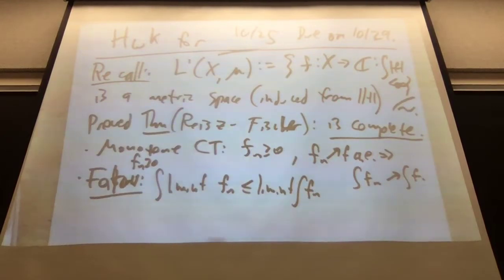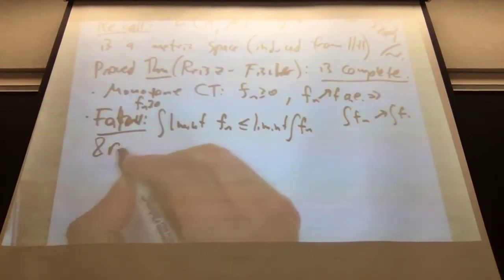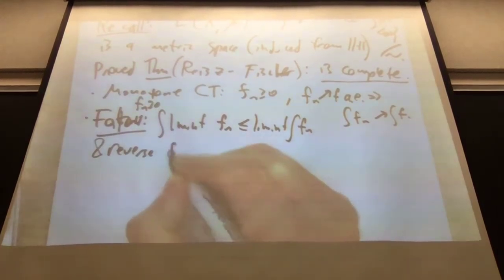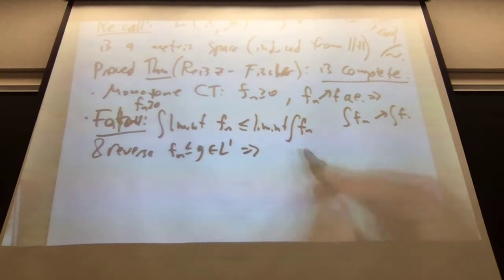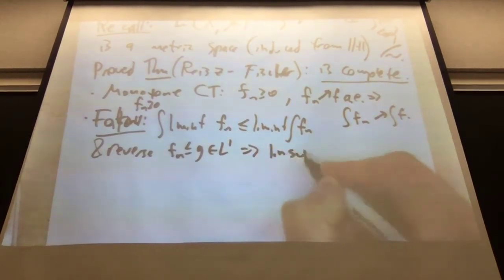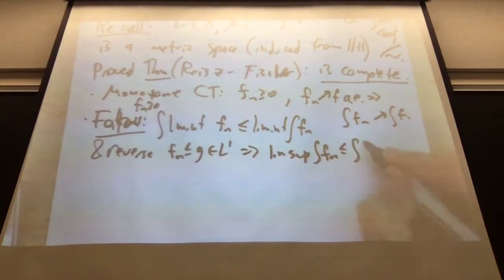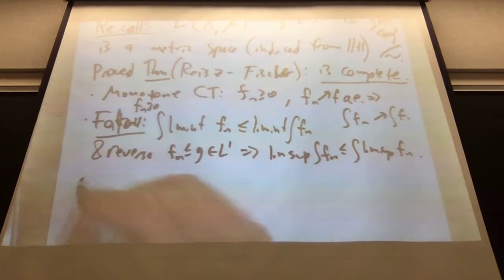What we're doing today is Fubini. We proved Fatou 2 and a reverse version. The reverse requires the F_n's to be dominated. If the F_n's are dominated by some G in L1, then the lim-sup of the integrals of the F_n's is dominated by the integral of the lim-sup. We used that to prove the dominated convergence theorem.